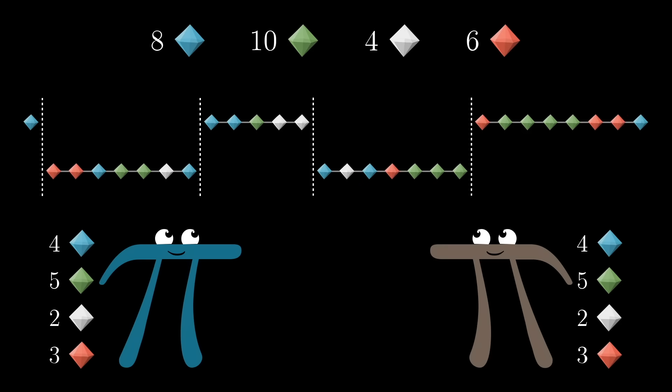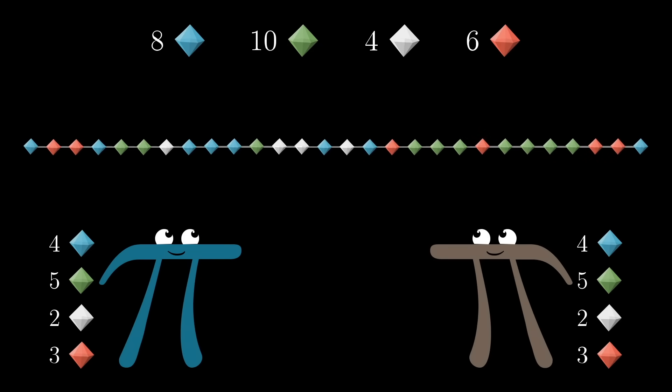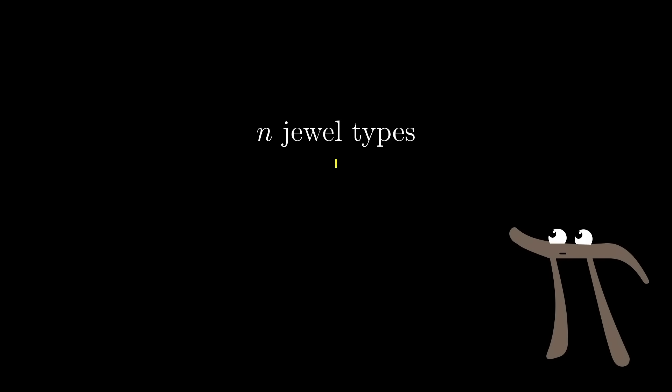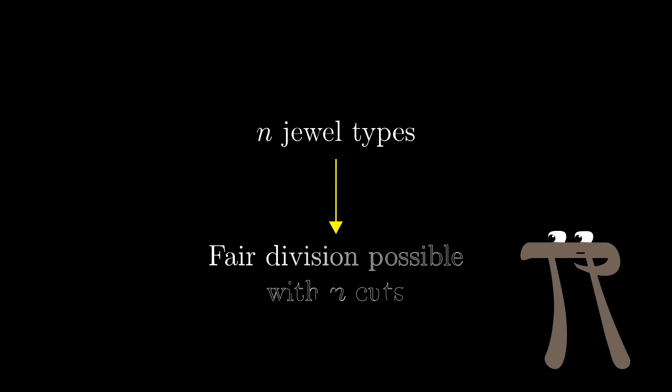The claim, the thing I want to prove in this video, is that if there are N different jewel types, it's always possible to do this fair division with only N cuts, or fewer.